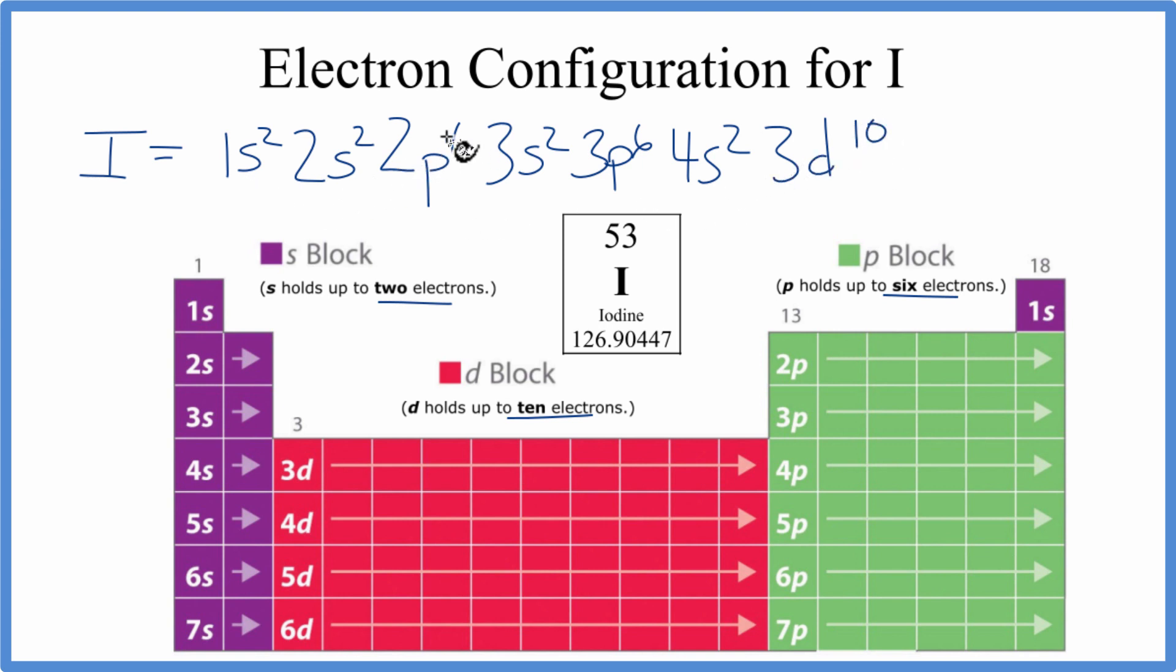At this point, we've used 30 electrons. So we need 23 more. After 3d, we go to 4p, put 6 in there. From 4p, we go to 5s2. We've used 38 electrons.